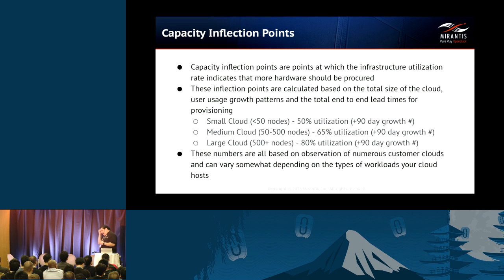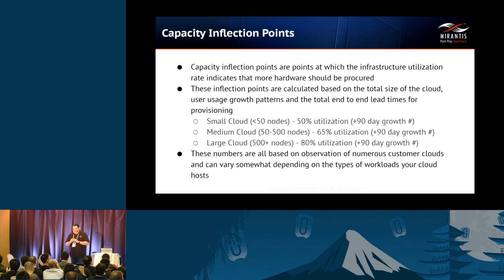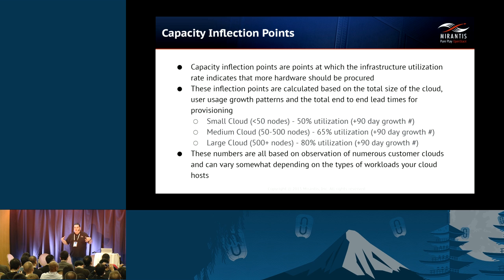Capacity inflection points: how do we look at this in a semi-pseudo-mathematical way — not a knee-jerk 'oh crap, we're out of capacity.' There are points at which the infrastructure utilization rate indicates that more hardware should be procured. This is what starts the provisioning process for additional hardware and additional capacity into your cloud.